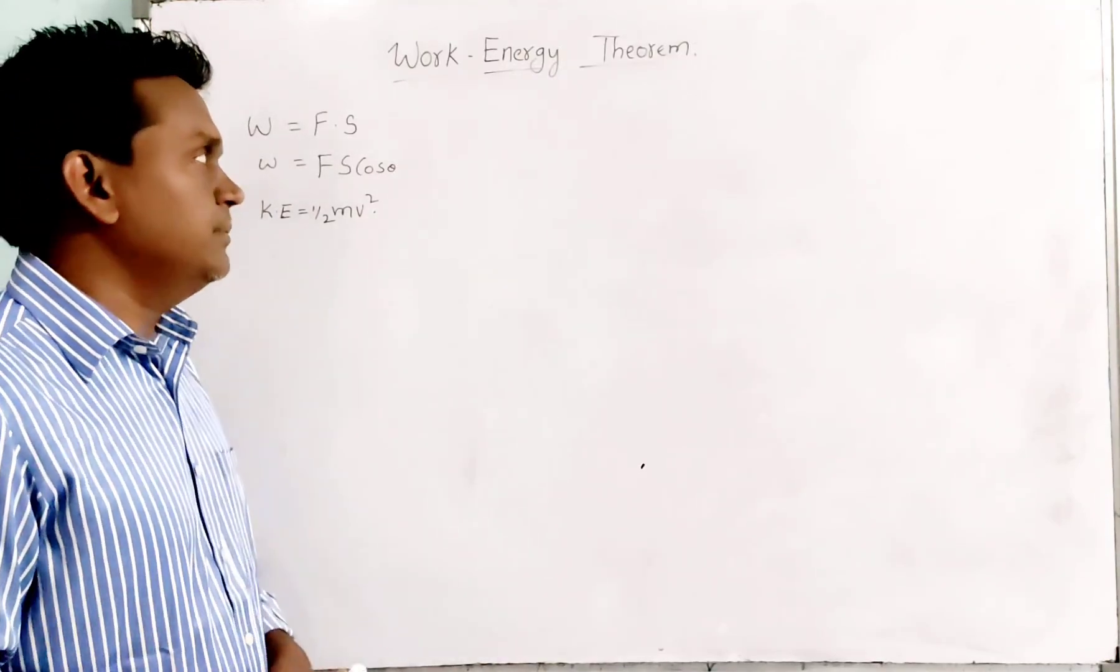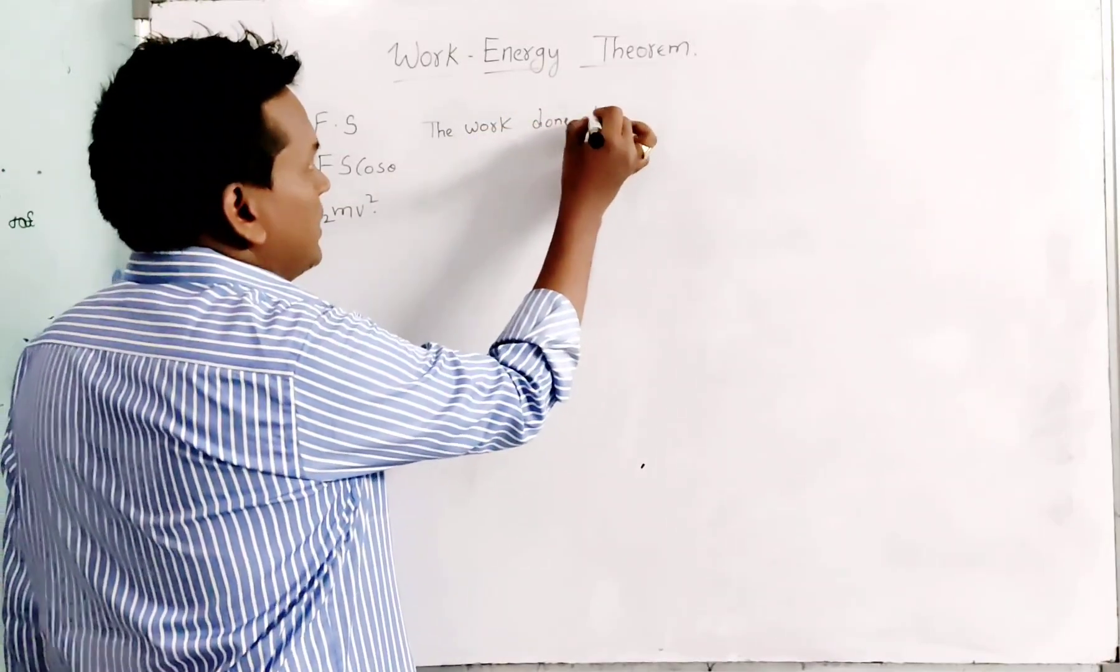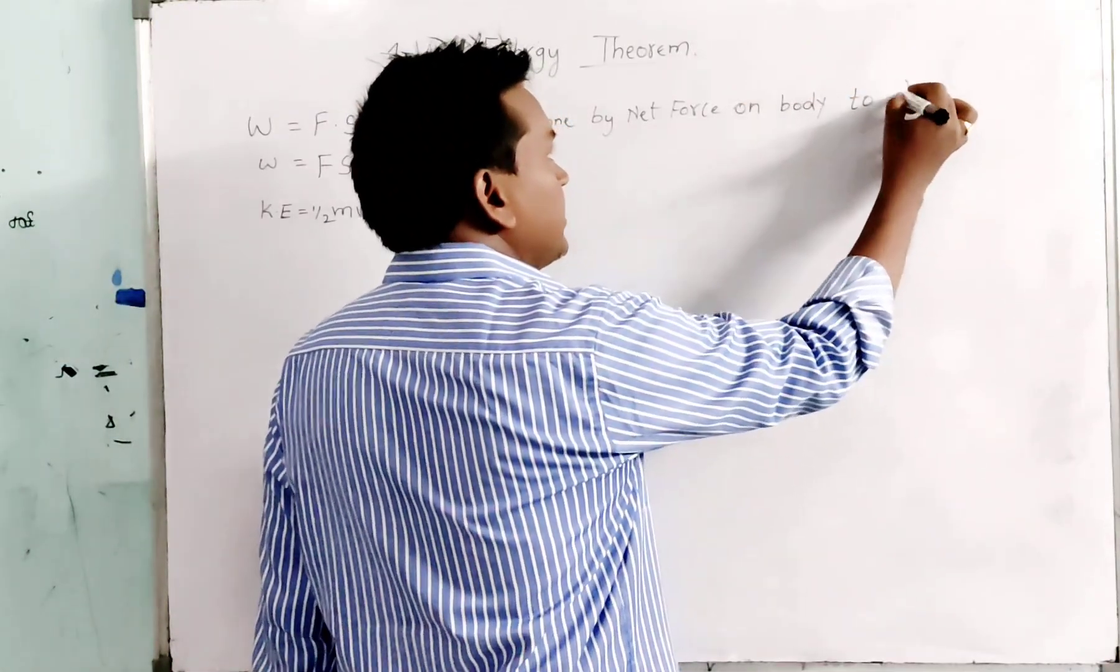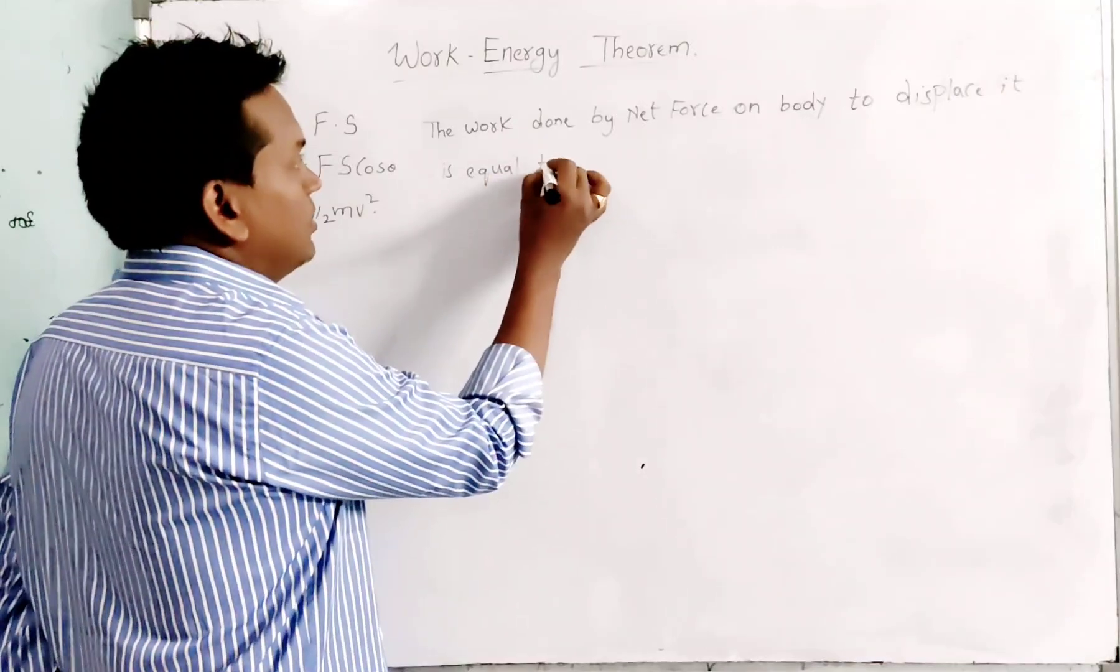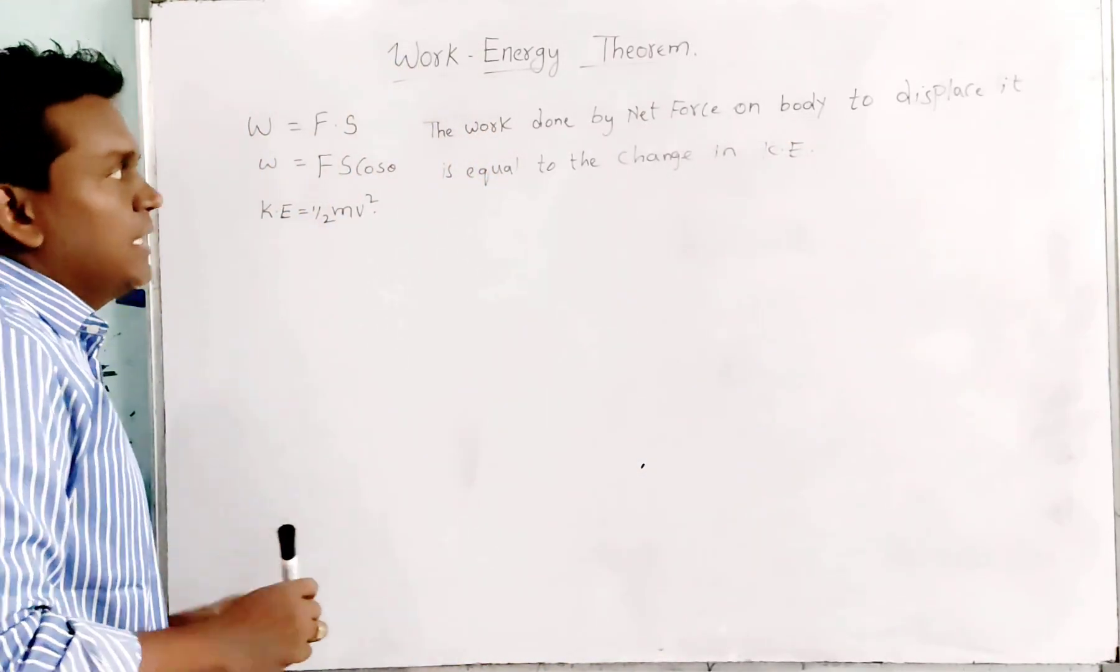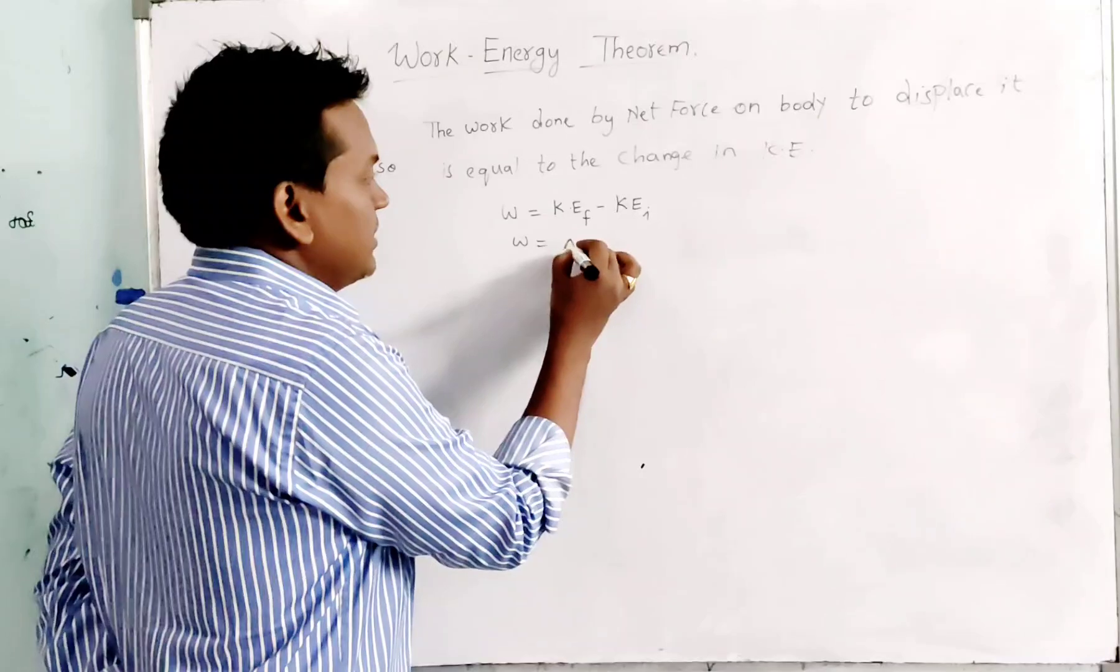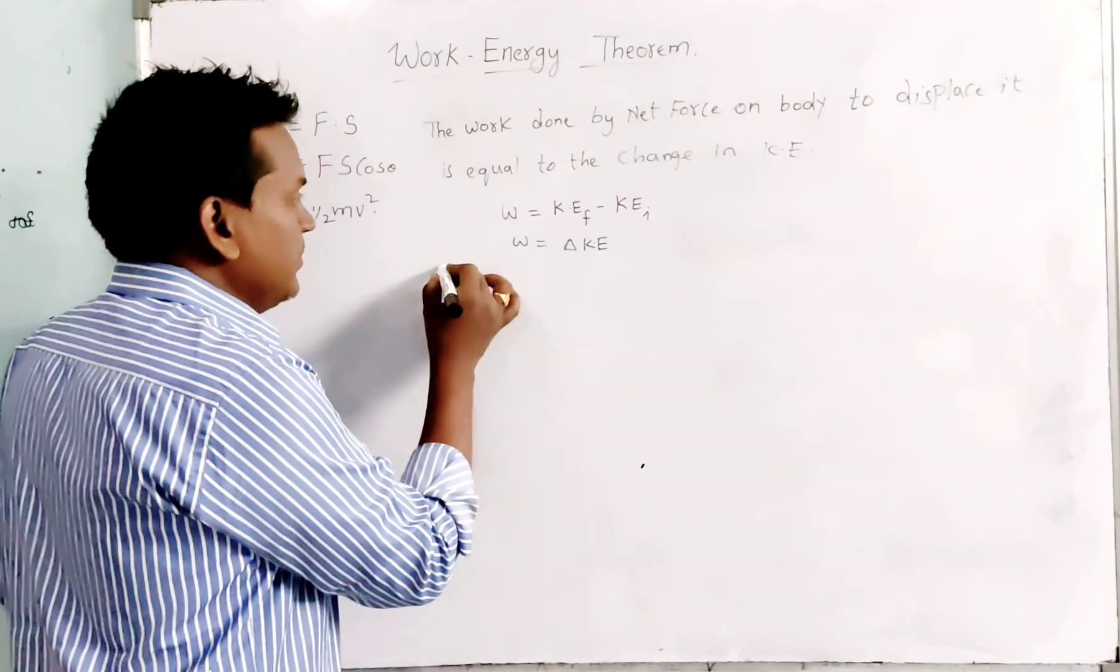Now coming to the work-energy theorem. For the work-energy theorem, we can consider this: the work done by net force on a body to displace it is equal to the change in its kinetic energy. Simply, we can write it as W equals kinetic energy final minus kinetic energy initial, or W equals delta KE, or change in kinetic energy. Let us work out this with a proof.